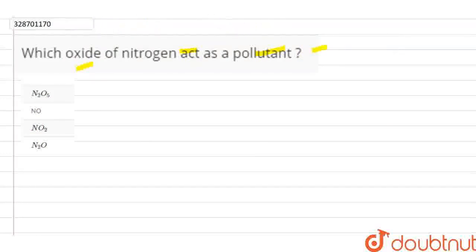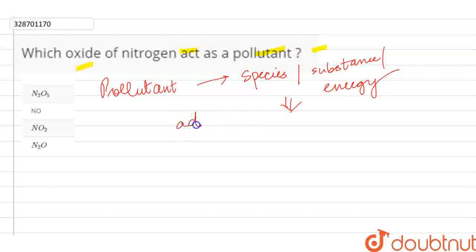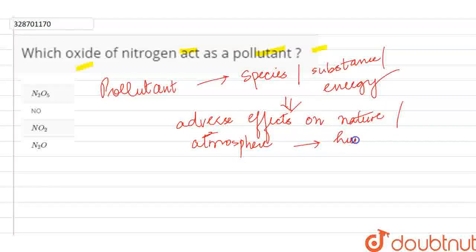I'll tell you first about pollutants. Pollutant - if I say the definition, then I can say any species, substance, or energy that has adverse effects on nature, atmosphere, and in the end, can affect human life and aquatic life.